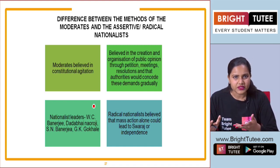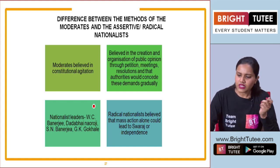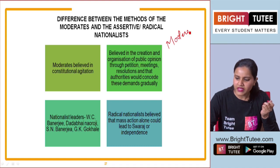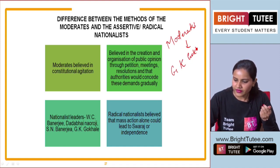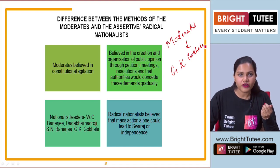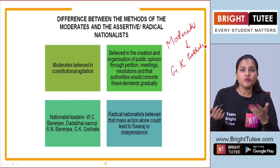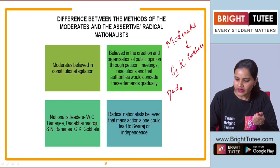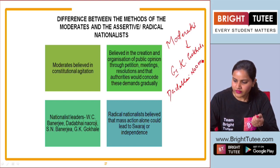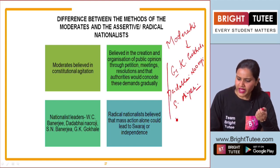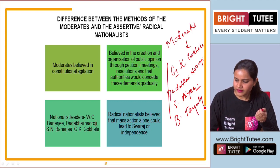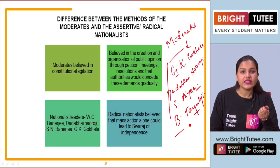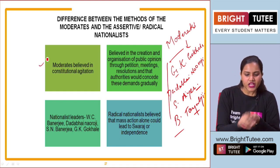When we talk about the moderates, what were their main aims and ideas? Do you remember the names of some moderate leaders? We can talk about Gopal Krishna Gokhale. Initially many leaders in the Indian National Congress were moderates. The best examples are Gopal Krishna Gokhale, Dadabhai Naoroji, Subramaniam Iyer, and Badruddin Tyabji. These were some of the important moderate leaders.